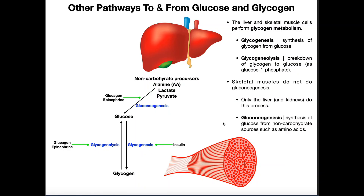Welcome back to Anatomy and Physiology on Catalyst University. My name is Kevin Tokoff. Please make sure to like this video and subscribe to my channel for future videos and notifications. In this video we're really going to talk about pathways to and from glucose and also discuss glycogen.